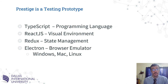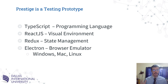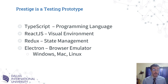Prestige is in the prototype stage. The prototype was developed with TypeScript using ReactJS — a tool developed by Facebook. It uses Redux for application memory, to remember what it was doing and share information between all the different parts. I used Electron, which is essentially a packaged version of Chromium, to run the application on any desktop operating system — Windows, Mac, and Linux. Basically it runs as a website packaged inside an application.